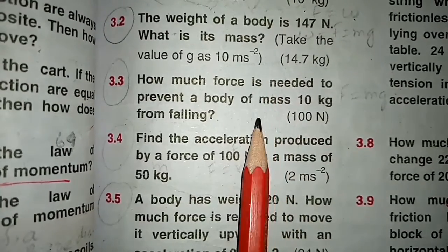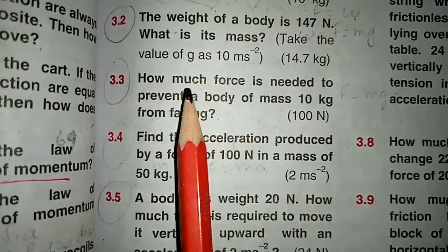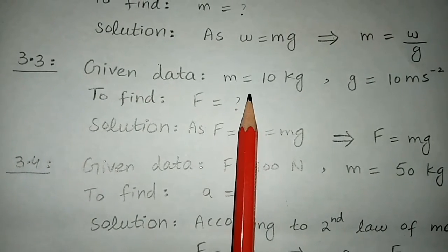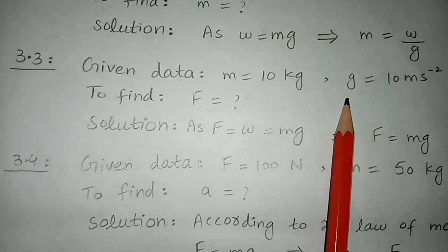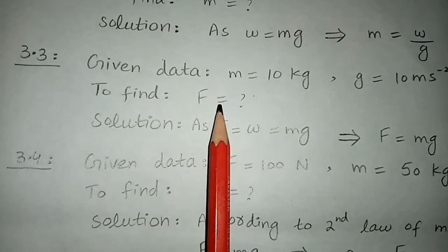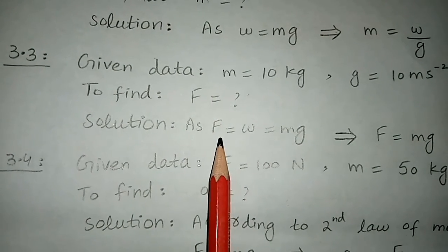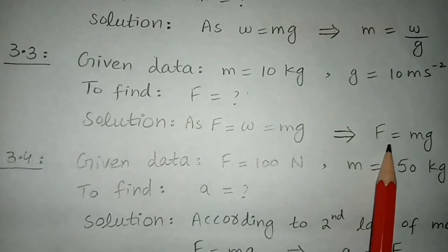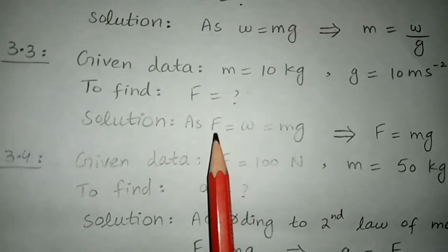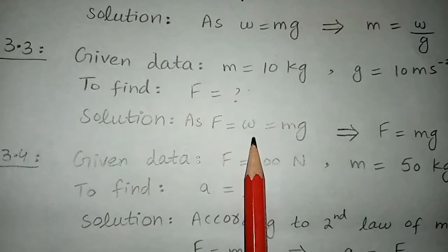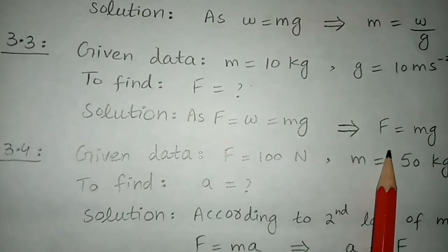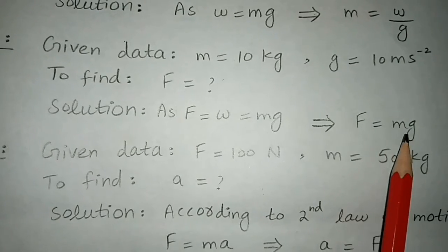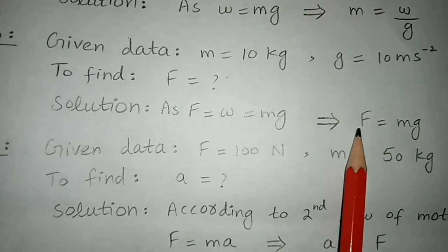The force needed will be equal to the weight of the body. Given data: mass equals 10 kg, g equals 10 meters per second square, and we have to calculate the force. Simply use the relation: weight equals mass into gravitational acceleration, so F equals mg. Since the force of gravity equals weight, we place the mass and g values and multiply to get the answer.